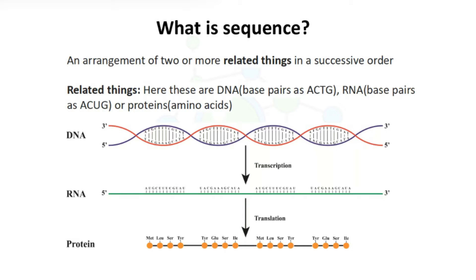The very first term that arises is sequence. When we google the term sequence, it tells us that it is an arrangement of two or more related things in a successive order. When we talk about related things, here these are DNA, RNA, or protein.